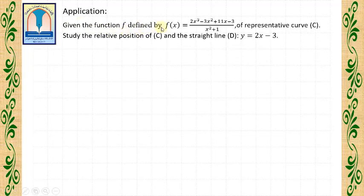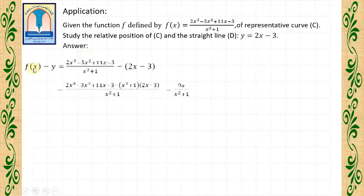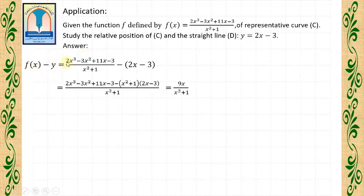Now solve the following application. Given the function F defined by F(X) = (2X³ − 3X² + 11X − 3) / (X² + 1), with representative curve C. Study the relative position of C and the straight line D of equation Y = 2X − 3. Answer: first, we find F(X) minus Y = (2X³ − 3X² + 11X − 3)/(X² + 1) minus (2X − 3). We make the same denominator, expand and reduce, so we get 9X / (X² + 1).